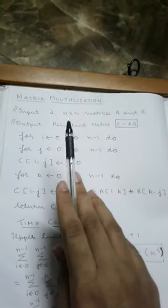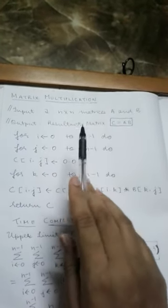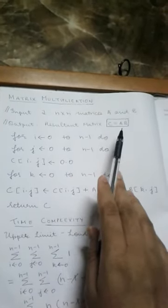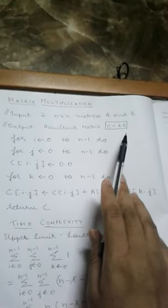Now the most important condition in matrix multiplication is that the number of columns of the first matrix should be equal to the number of rows of the second matrix, where this condition comes into play.